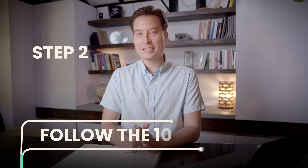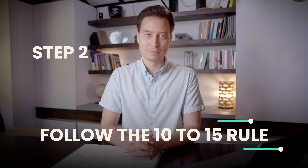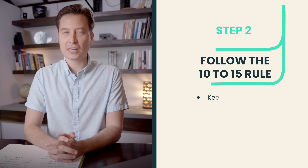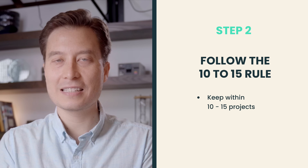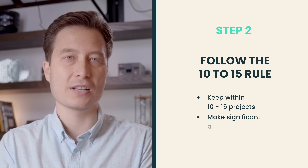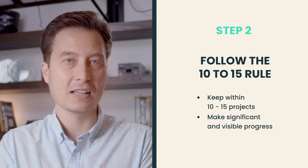Step two: follow the 10 to 15 rule. You want to end up with no more than about 15 projects on your list and no fewer than about 10. If you have more than 15 projects, you're unlikely to make significant visible progress on them in any given week. The risk is that if you don't make visible progress, you'll stop believing you can and you'll abandon your projects. The point of a project list is focus — the ability to decide on your priorities, move them forward, and see progress.